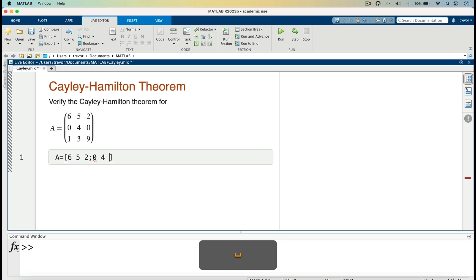0, 4, 0, then semicolon to indicate you are going to the next row, 1, 3, 9. So that is our matrix here.